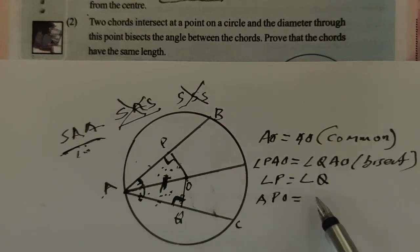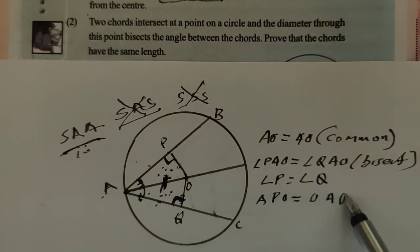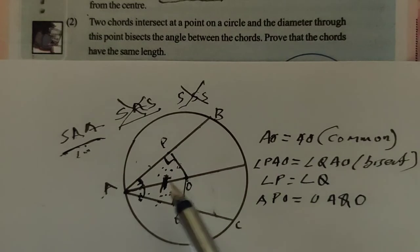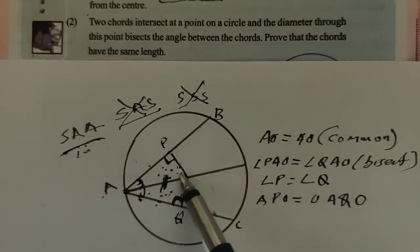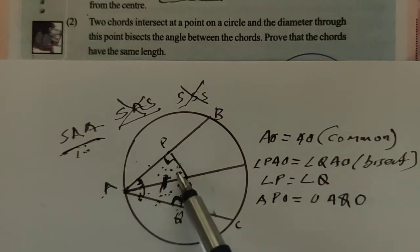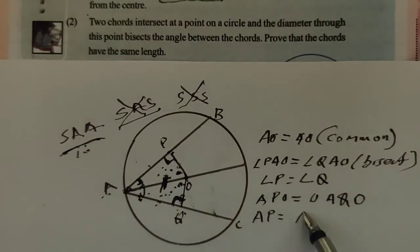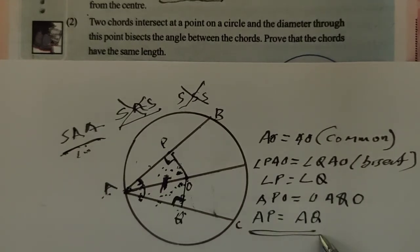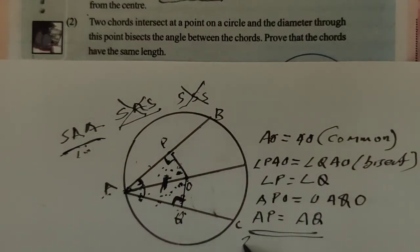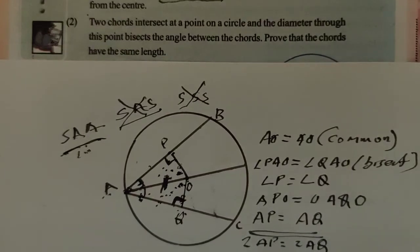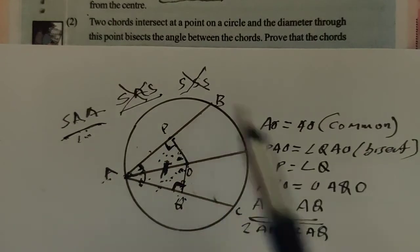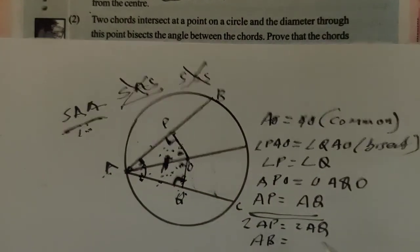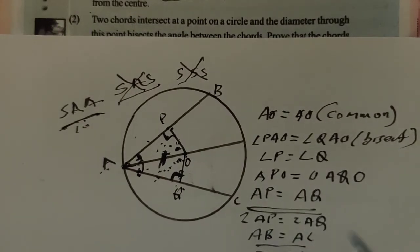Triangle APO is congruent to triangle AQO. Since the triangles are congruent, sides opposite to equal angles are equal. AP is the side opposite to angle O in one triangle, and AQ is the side opposite to the same angle in the other triangle. Therefore AP equals AQ. Since AP is half of AB, then 2AP equals 2AQ, giving AB equals AC. Hence the theorem is proved.